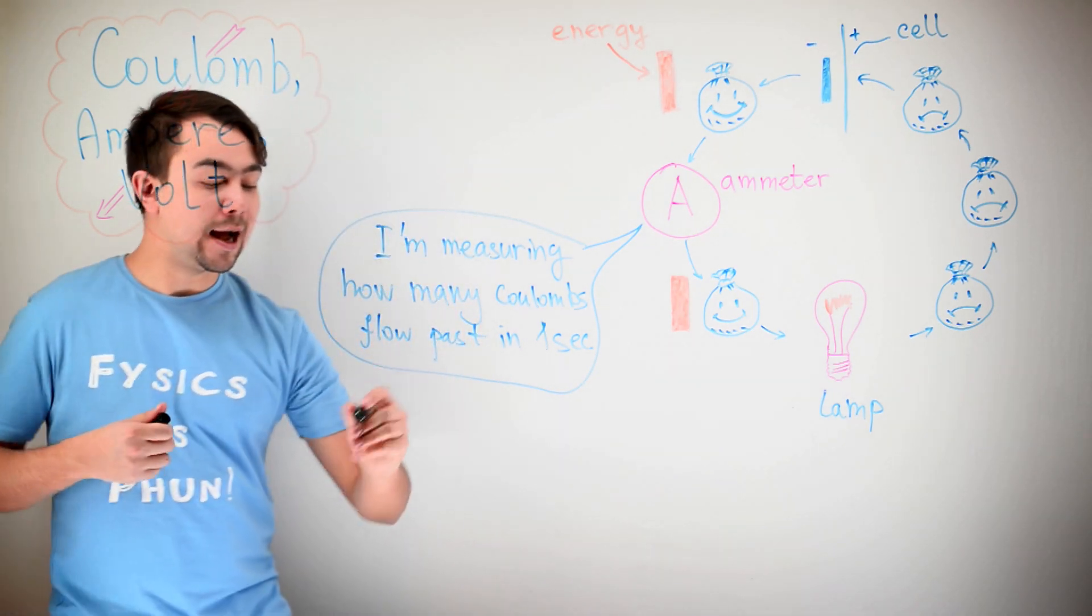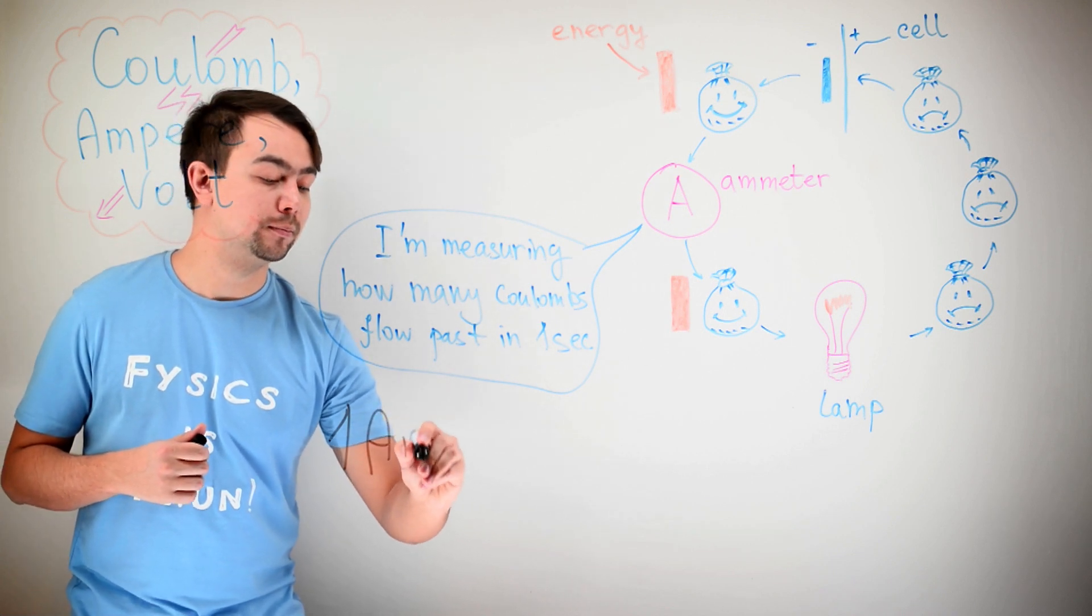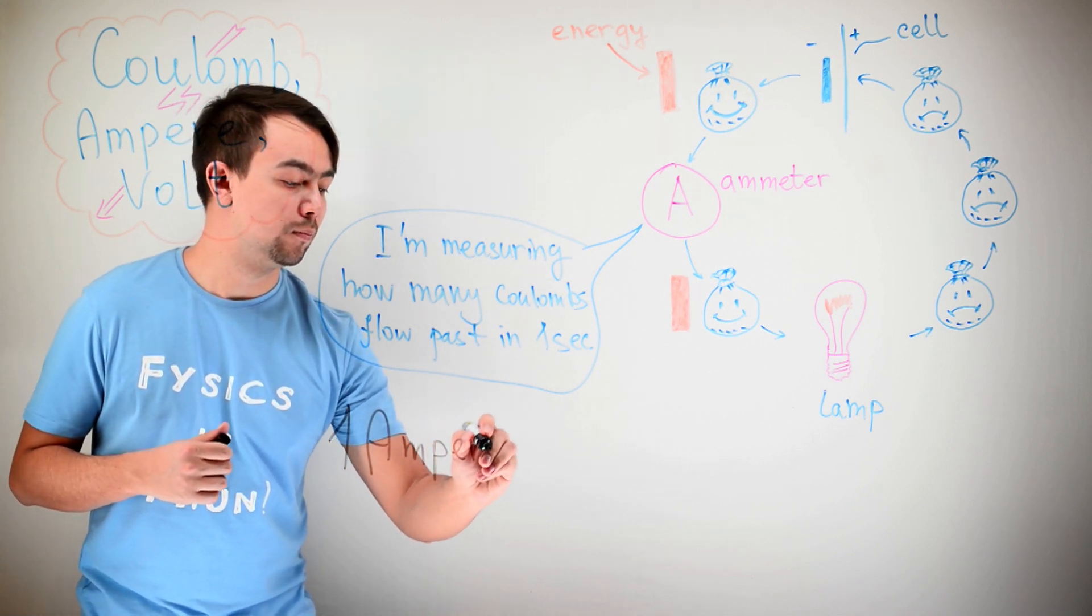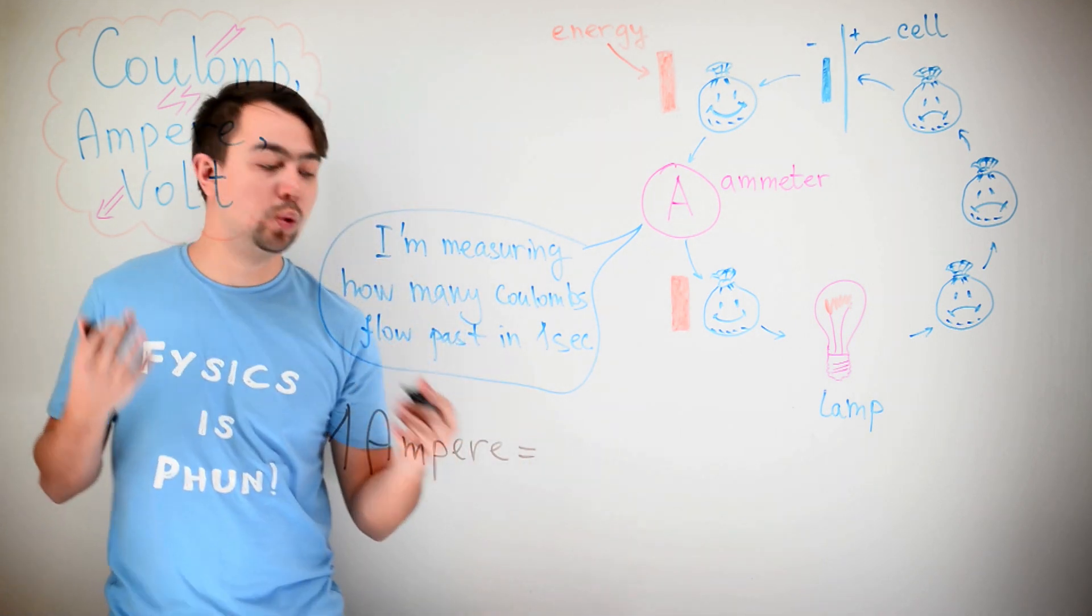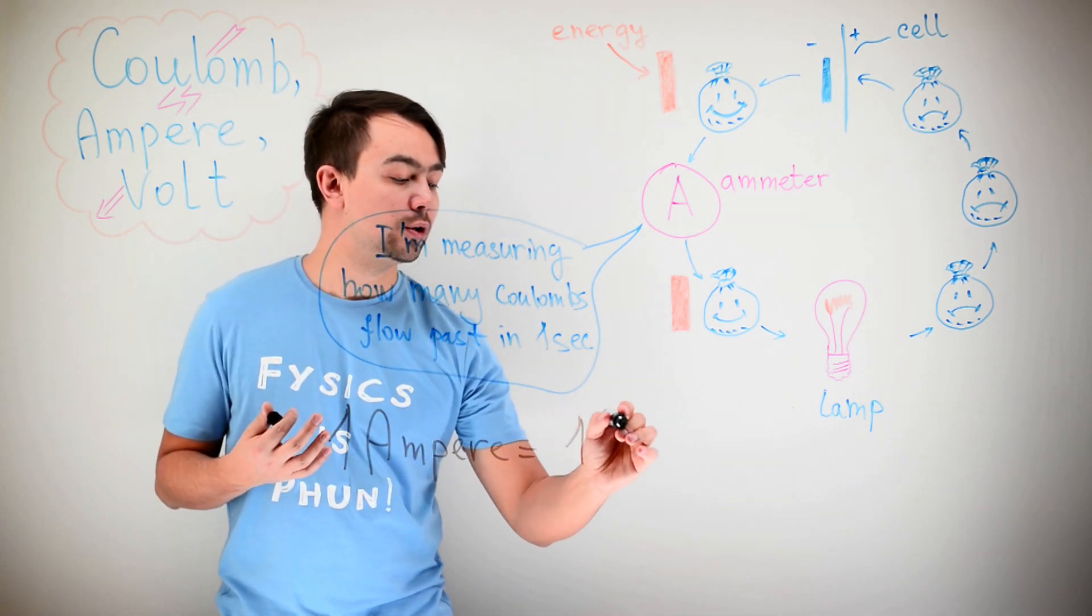So, one Ampere is simply one Coulomb in one second.